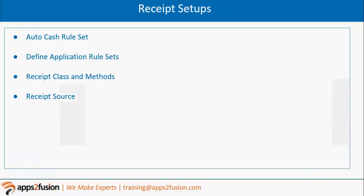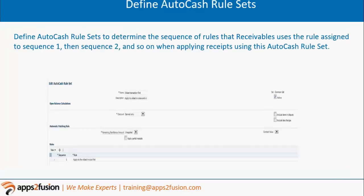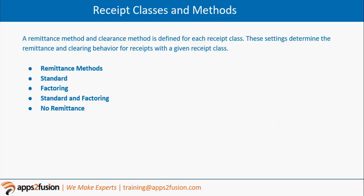Now we will see one receipt setup - the mandatory setup, we will not see all the setups. Then we will see the transaction parts; we will enter one invoice and one receipt after this. So we have the receipt setup: that is the receipt class, receipt method, and remittance bank account.